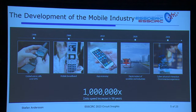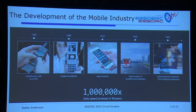5G is more about the digitalization of societies and industries and is being rolled out as we speak. Then we have something around 2030 that we'd like to call 6G, which is still very much not set — we have visions, but we're not there yet. You can also see that the data speed increased one million times in those 30 years between 1990 and 2020, which is quite impressive.